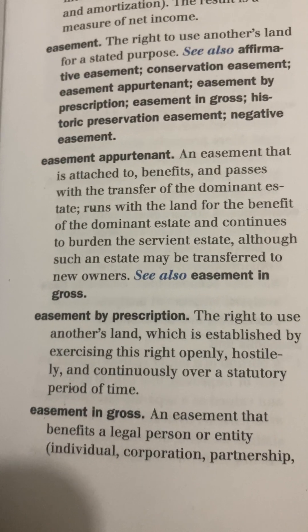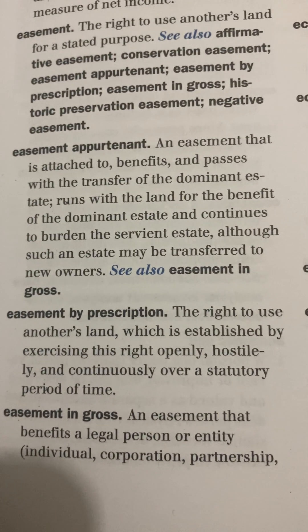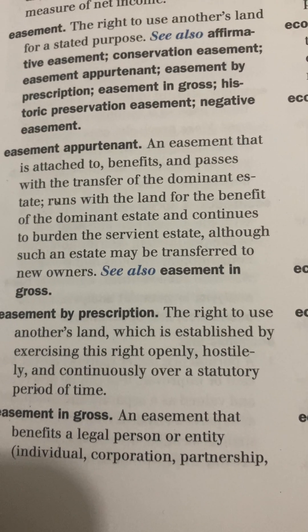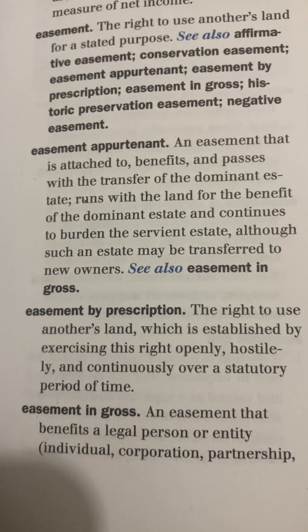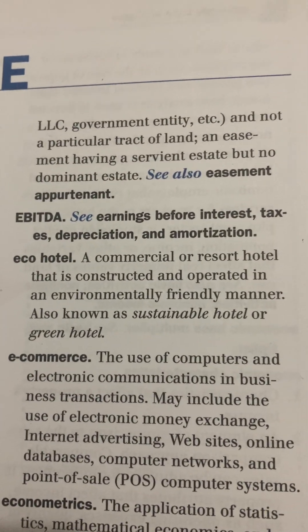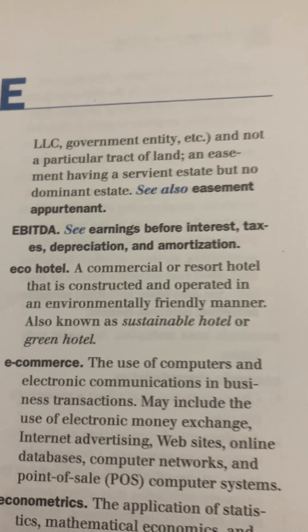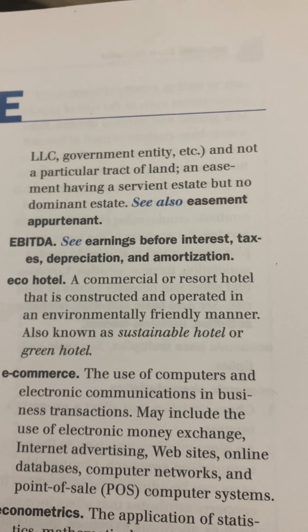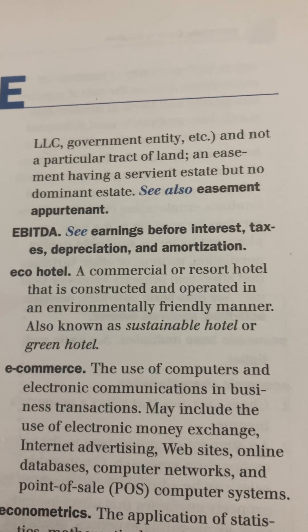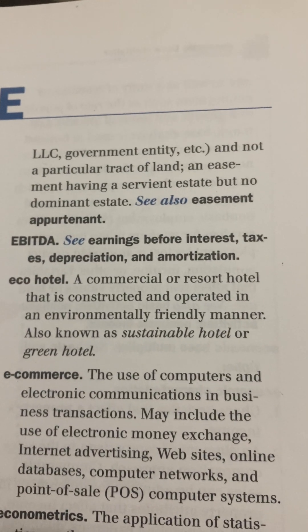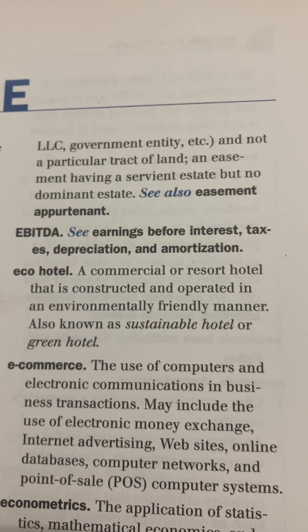Easement in Gross: an easement that benefits a legal person or entity — which could be an individual, corporation, partnership, LLC, government entity, etc. — and not a particular tract of land. An easement in gross has a servient estate but no dominant estate. See also Easement Appurtenant.